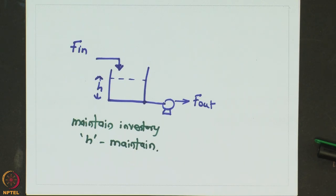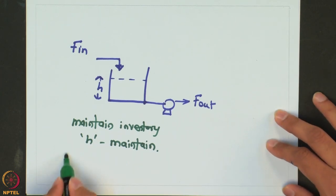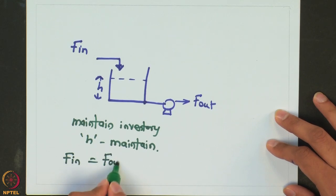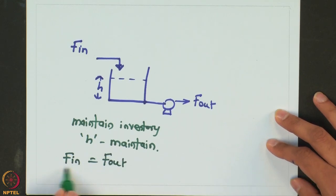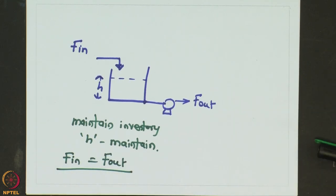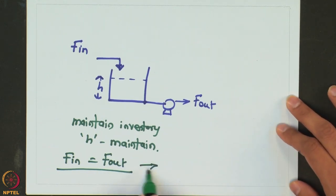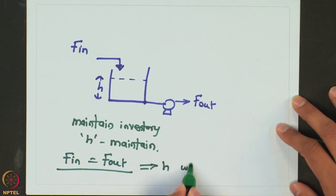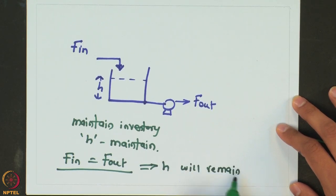From your basic material balance, you can know that as long as you maintain f_in equal to f_out, your height will be maintained, which we also call as steady state.